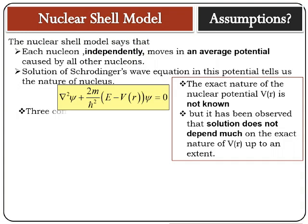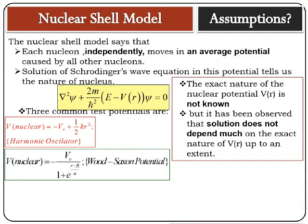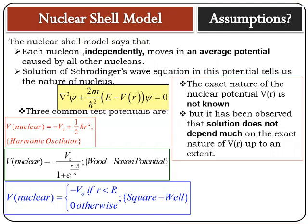There are three common test potentials: one is the harmonic oscillator potential, the second is the Wood-Saxon potential, and the third is the square-well potential. You need not remember the expressions for these potentials at this stage because we are not going to solve the Schrödinger equation here. We would discuss the nature of the solution, but not the steps of the solution — that is not part of your syllabus. There can be other potentials as well beyond these three.